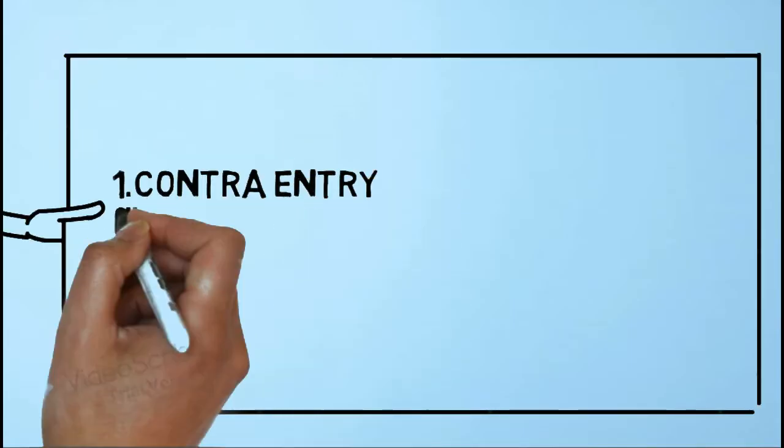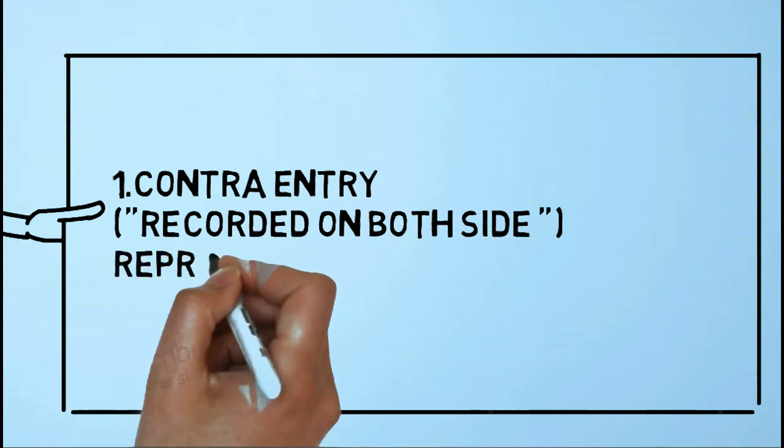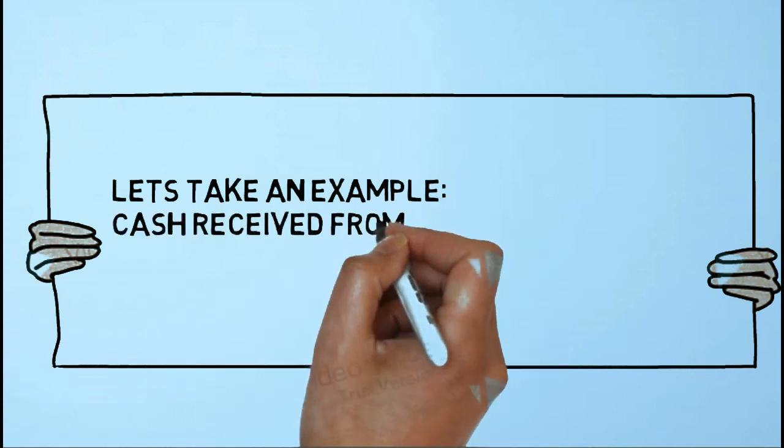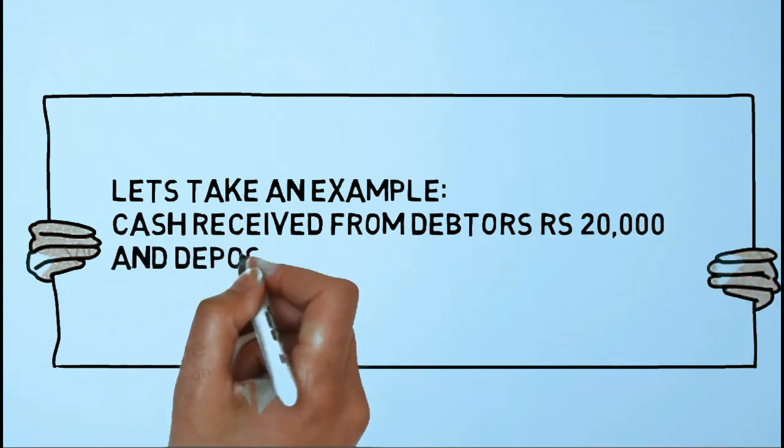It is recorded on both sides of the cash book. It is represented by 'C' in the V/N column. Let's take an example of it: cash received from debtors of 20,000 and deposited into bank.